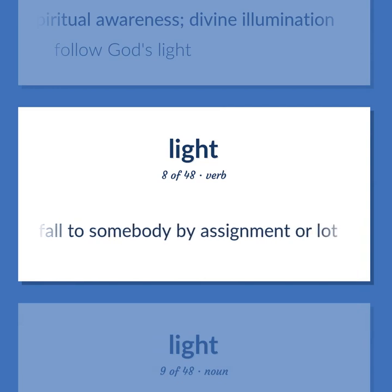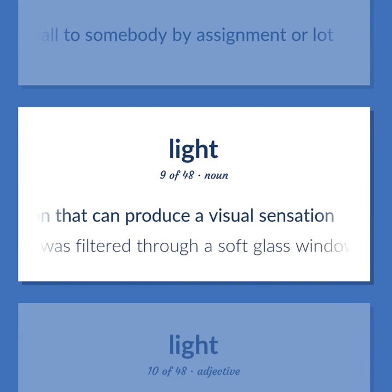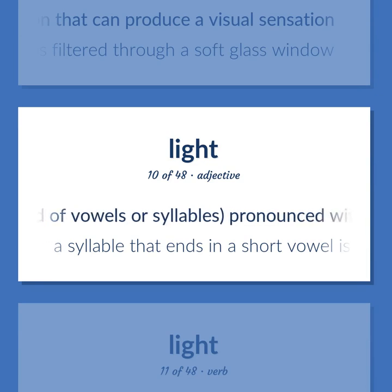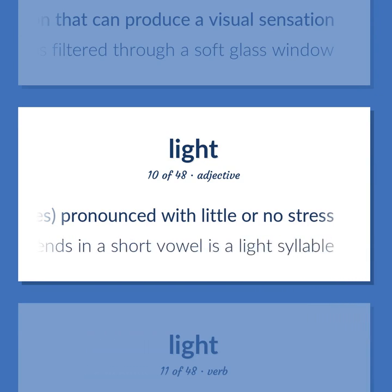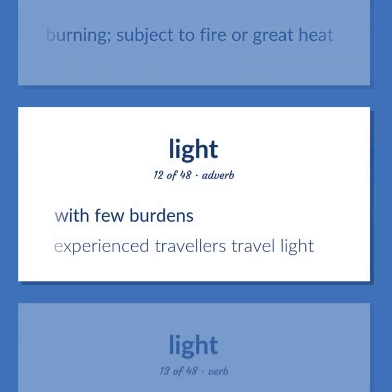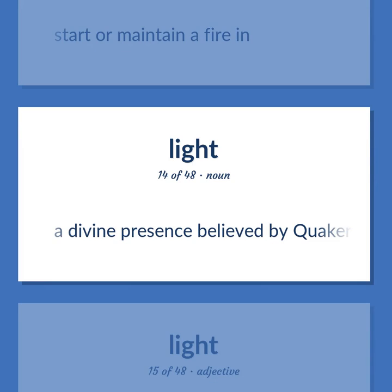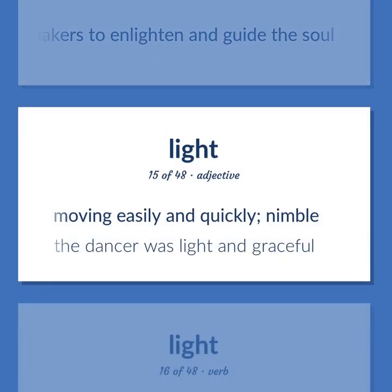Fall to somebody by assignment or lot. Physics: electromagnetic radiation that can produce a visual sensation — the light was filtered through a soft glass window. Used of vowels or syllables pronounced with little or no stress — a syllable that ends in a short vowel is a light syllable. Cause to start burning; subject to fire or great heat. With few burdens — experienced travelers travel light. Start or maintain a fire in. A divine presence believed by Quakers to enlighten and guide the soul. Moving easily and quickly; nimble — the dancer was light and graceful.